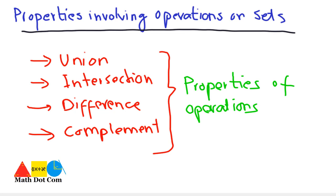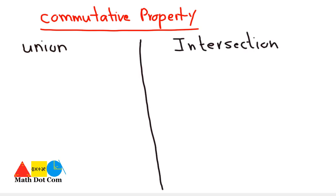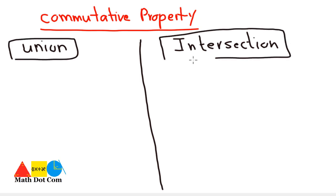First, we will see the properties of union and intersection. The first property is the commutative property. We will see the commutative property of union and intersection side by side. The commutative property states that the order of sets in which we perform operations does not change the results.